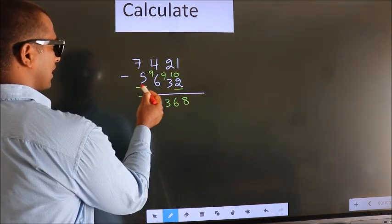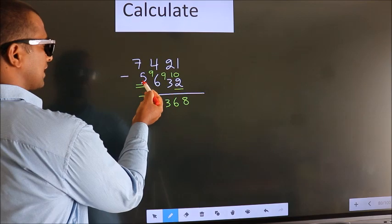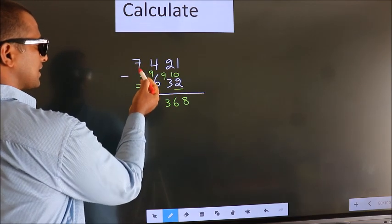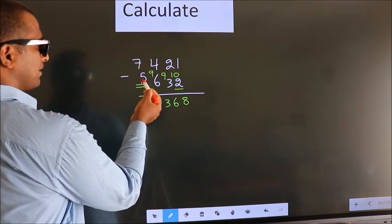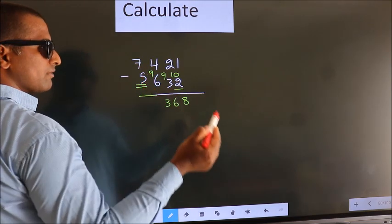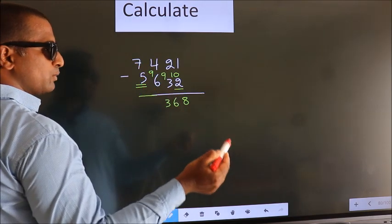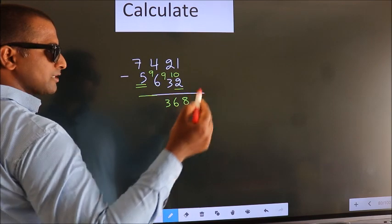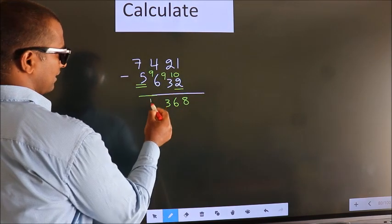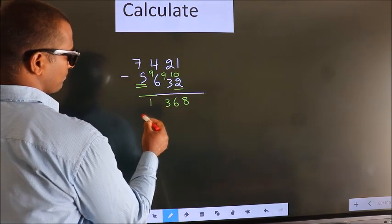9. Now for the first digit we do 7 minus 5, we get 2. Decrease more by 1, we get 1.